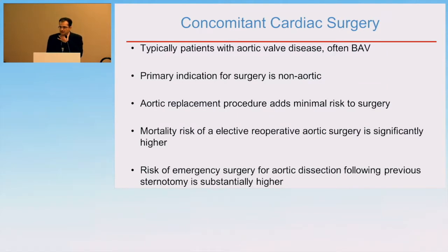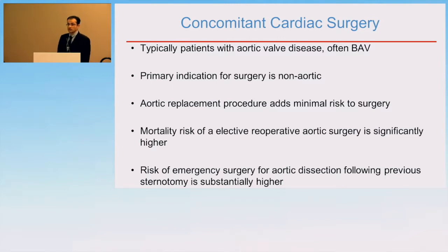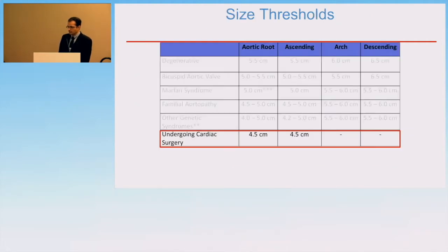Lastly, patients undergoing concomitant cardiac surgery — most commonly aortic valve surgery — present a special case. While the primary indication is non-aortic, leaving behind a dilated aorta may require a higher risk operation in the future, or treatment of an aortic dissection in that context can be substantially higher risk. For that reason, patients undergoing concomitant cardiac surgery are recommended to undergo aortic replacement when their aortic size is 4.5 centimeters.